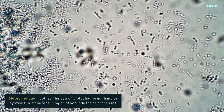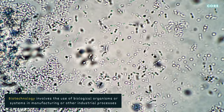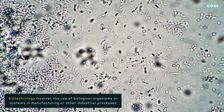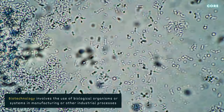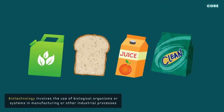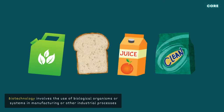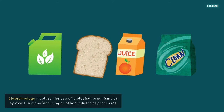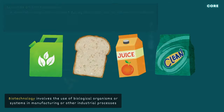Biotechnology involves the use of biological organisms or systems in manufacturing or other industrial processes. Examples of products that rely on biotechnology include biofuels, leavened bread, fruit juice, and biological washing powders.